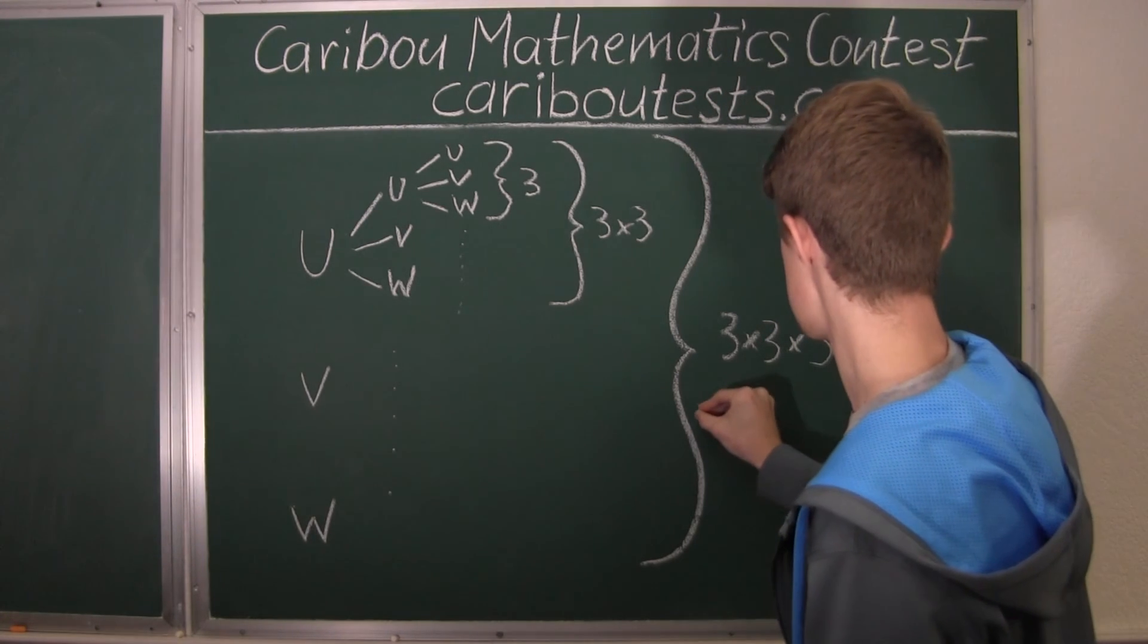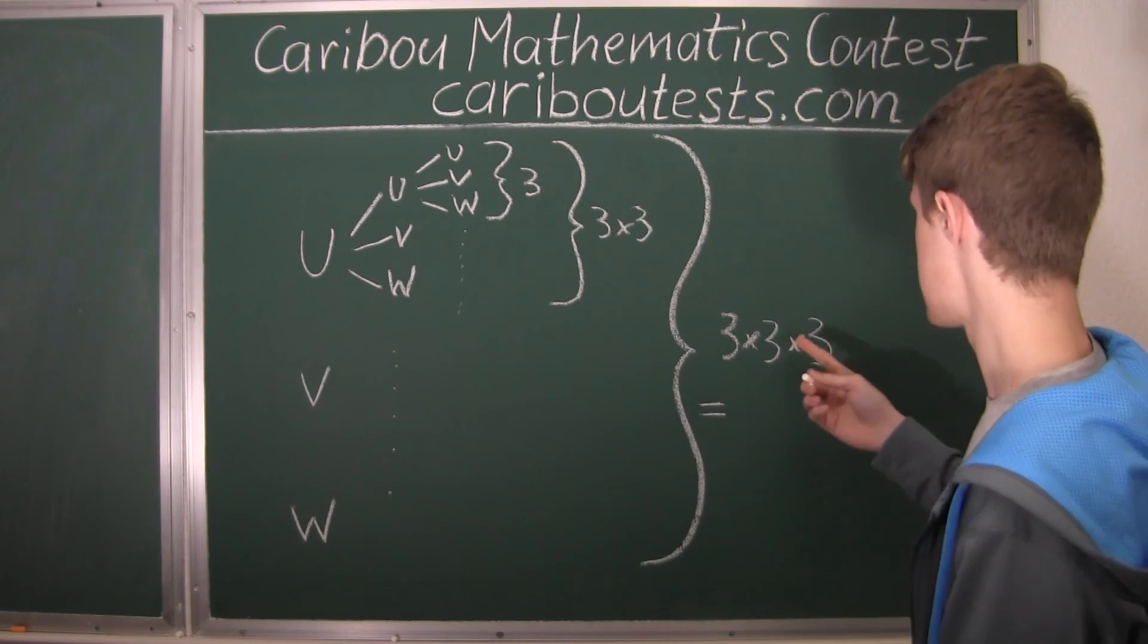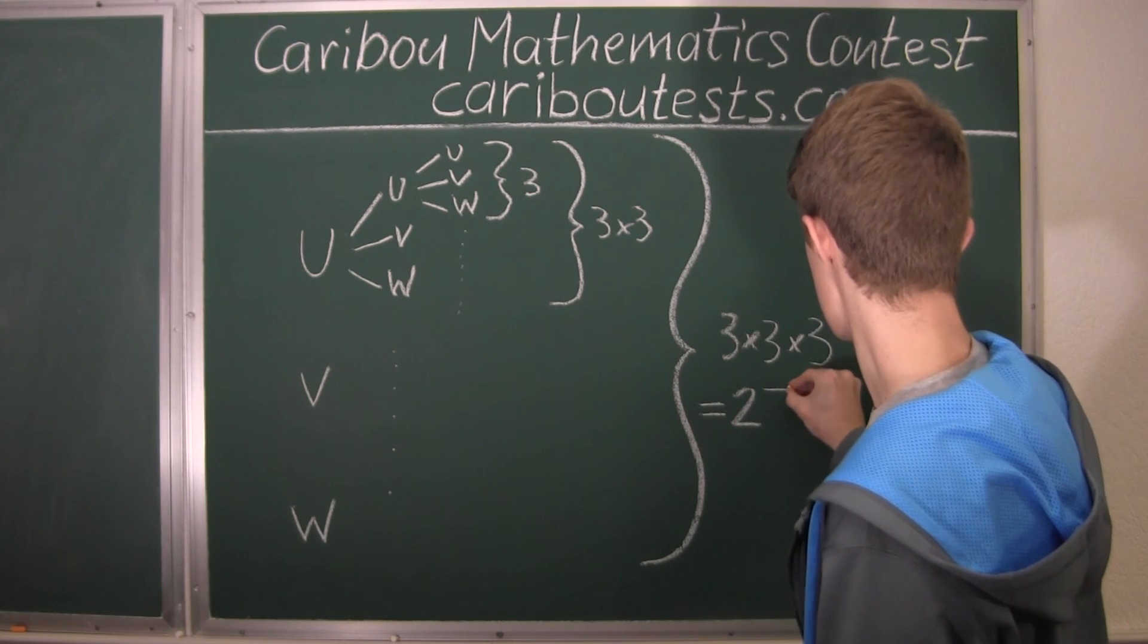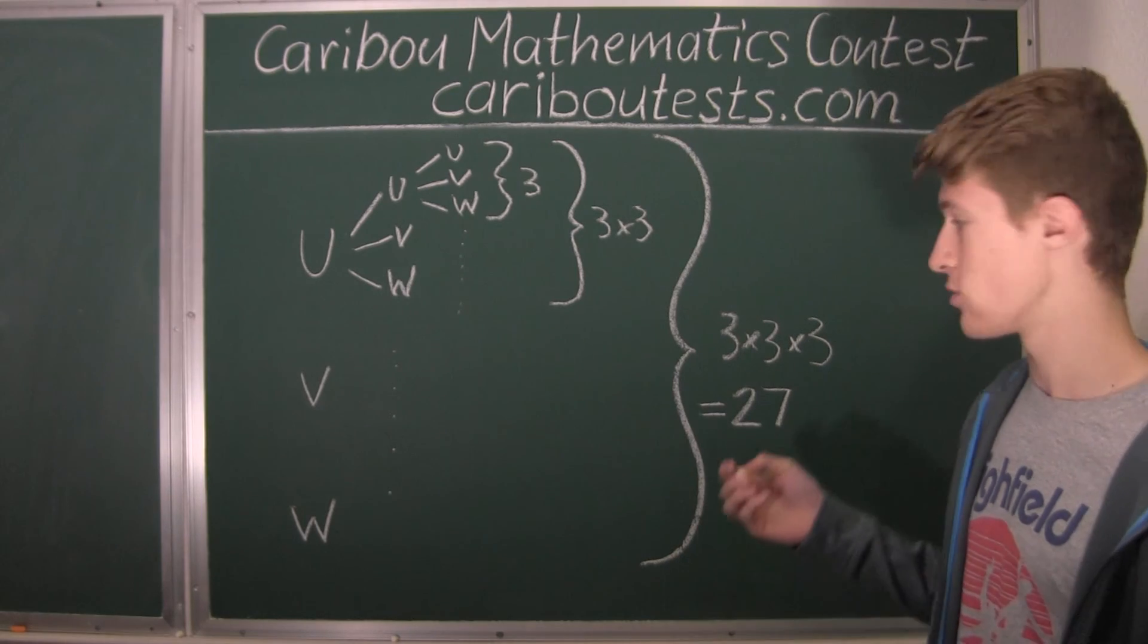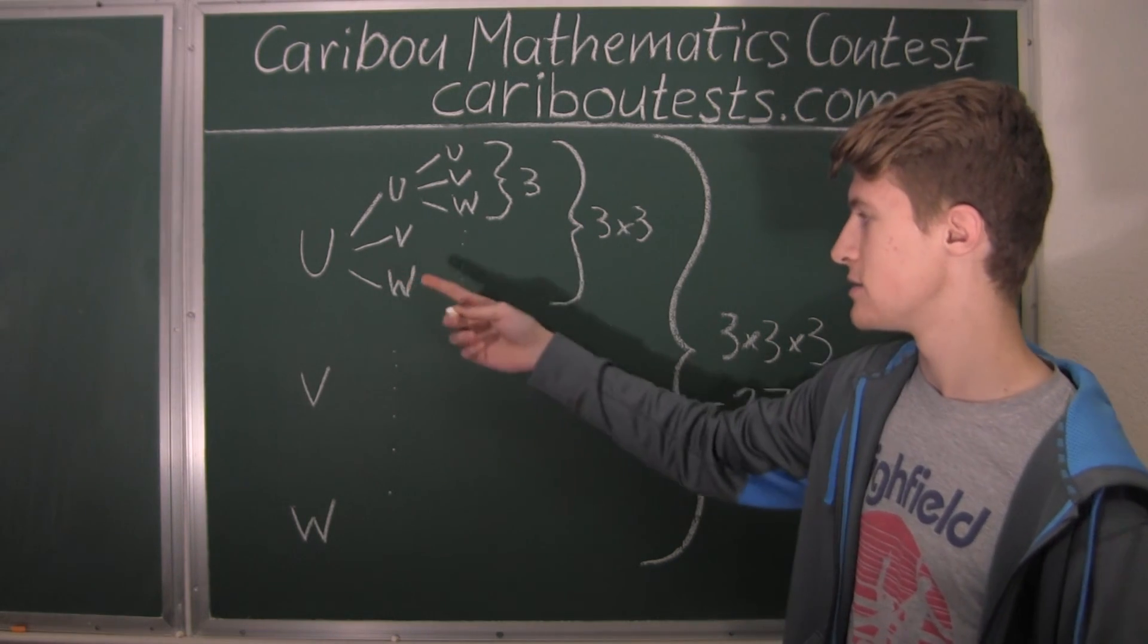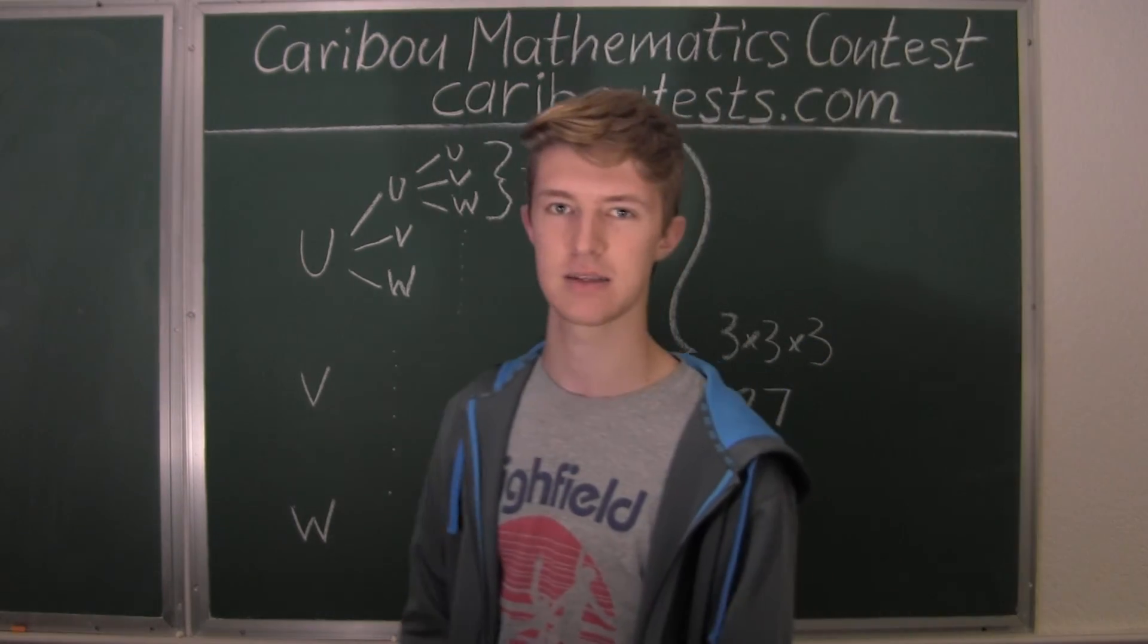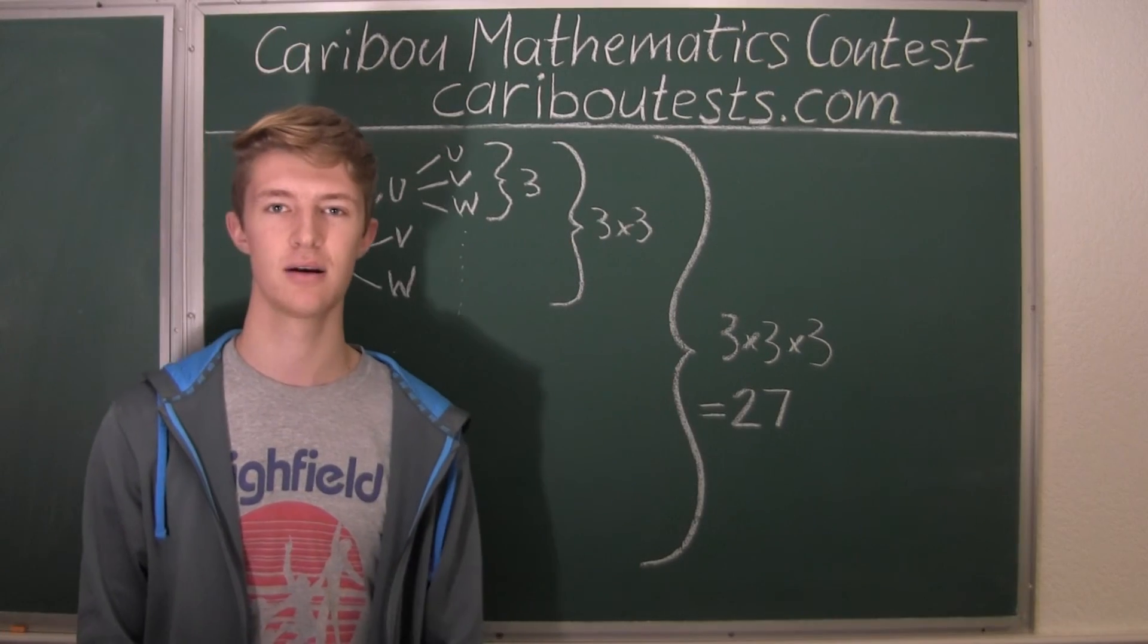And this is equal to, 3 times 3 is 9, and 9 times 3 is 27. Okay, so we know that there are 27 different three-letter words using the letters U, V, and W. If you'd like to know more about this contest, please feel free to visit our website at CaribouTests.com.